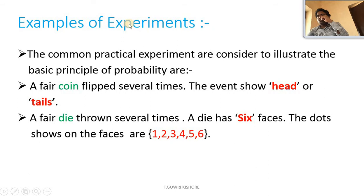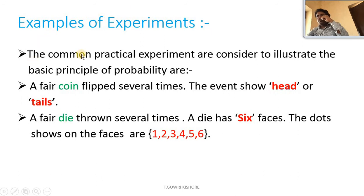So examples of experiments. These are the basic examples where we are going to apply the basic concept of probability. The common practical experiments considered to illustrate the basic principle of probability include a fair coin flipped several times — the events show head or tails.